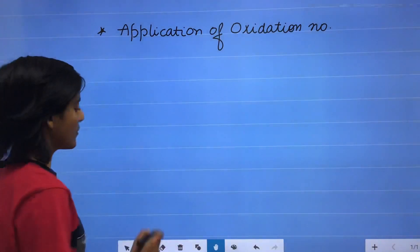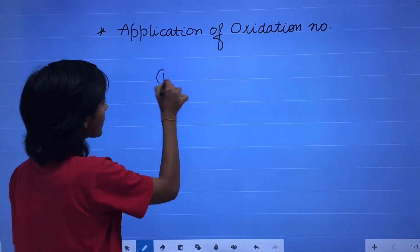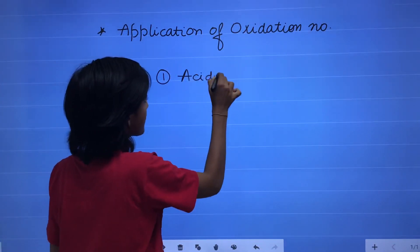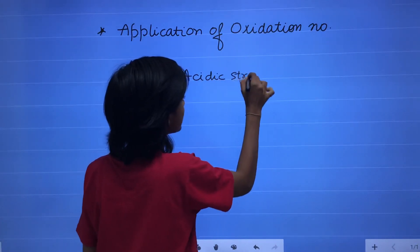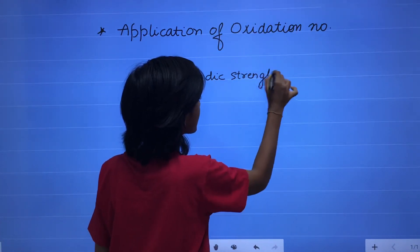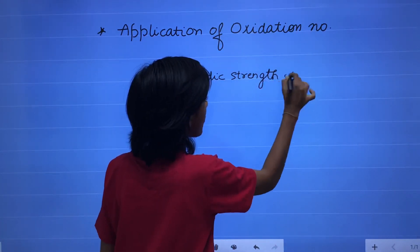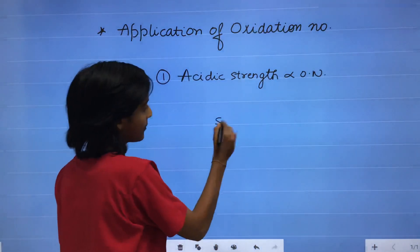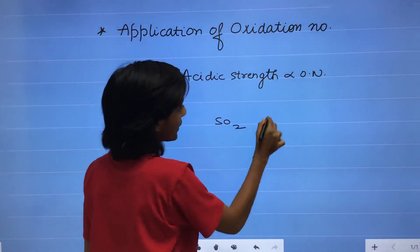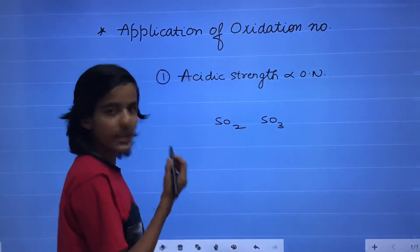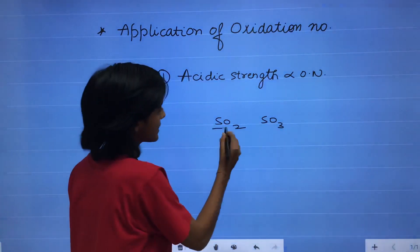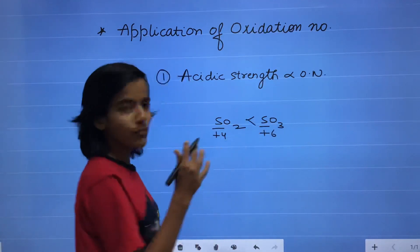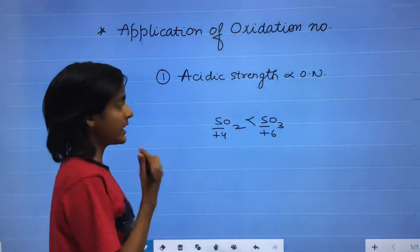First we will discuss about acidic strength. Acidic strength is directly proportional to the oxidation number. For example, if we compare SO2 and SO3, the oxidation state of sulfur is +4 and +6 respectively. So SO3 is more acidic than SO2.